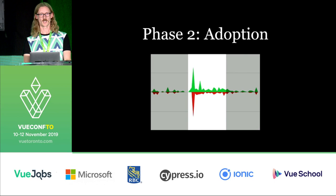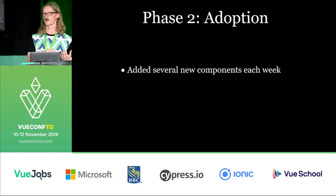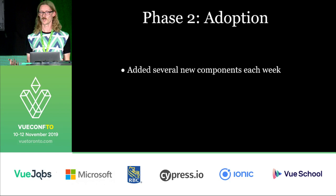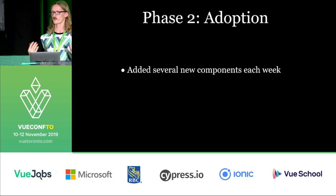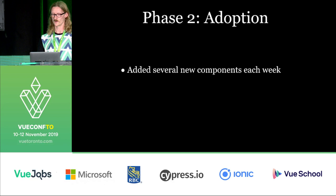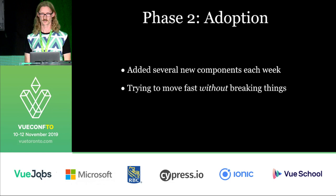As these developers were working on different features and converting them over to Vue and over to using Construction Yard, our component library, they were finding gaps where they didn't have components they needed. And so, as previously mentioned with lesson number one, as they found they needed new components they were adding them to the library. But because they were adding them so quickly, we had some issues with trying to move fast without breaking things.